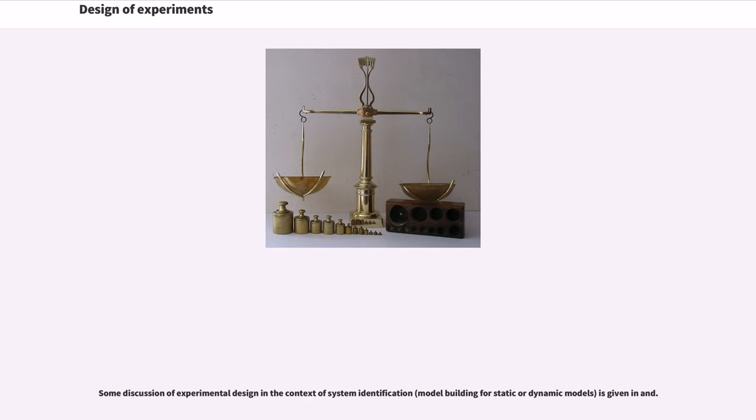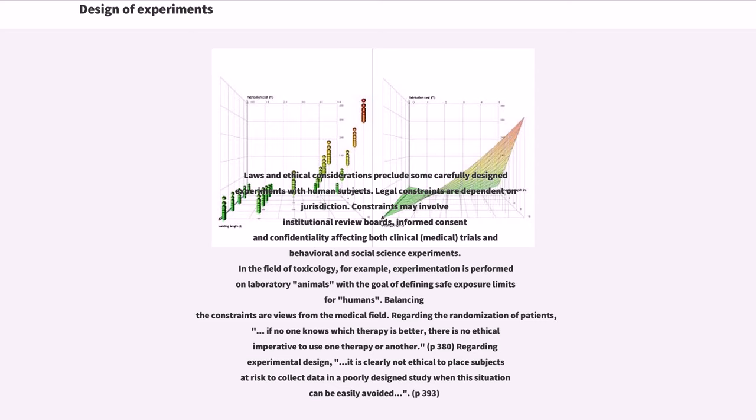Laws and ethical considerations preclude some carefully designed experiments with human subjects. Legal constraints are dependent on jurisdiction. Constraints may involve the institutional review boards, informed consent and confidentiality affecting both clinical, medical, trials and behavioral and social science experiments. In the field of toxicology, for example, experimentation is performed in laboratory animals with the goal of defining safe exposure limits for humans.